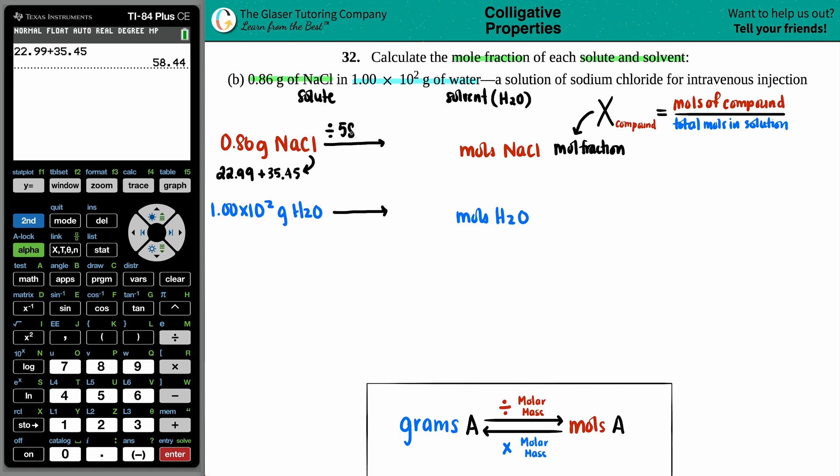So I'm going to take the 0.86 grams and divide it by the 58.44. So 0.86 divided by this number, and I get 0.0147. That looks good to me.